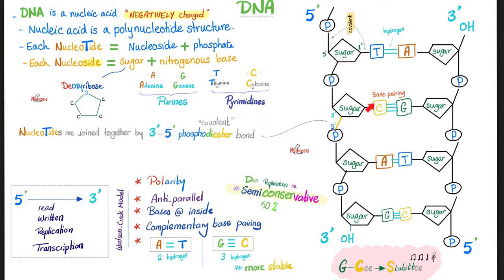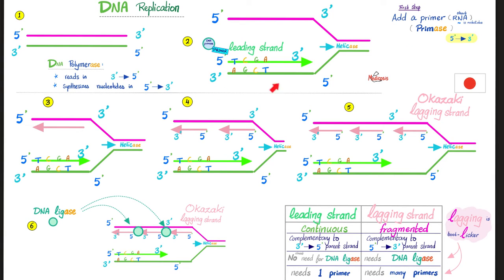That's why the GC couple is more stable than A-T pairing — remember, GC stability. We talked about DNA replication in previous videos. Just remember that the first step is adding a primer, which is a short RNA sequence. What's the enzyme that adds a primer? Primase.